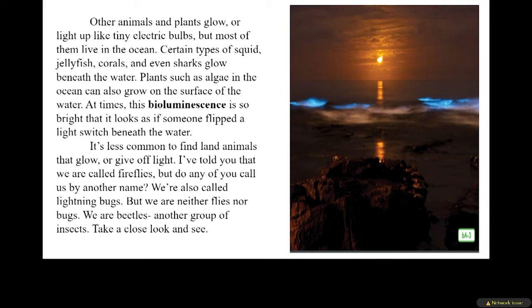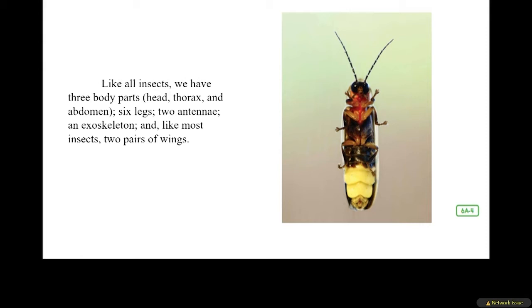I've told you that we are called fireflies, but do any of you call us by another name? We are also called lightning bugs, but we are neither flies nor bugs. We are beetles — another group of insects. Like all insects, we have three body parts: head, thorax, and abdomen, six legs, two antennae, an exoskeleton, and like most insects, two pairs of wings.